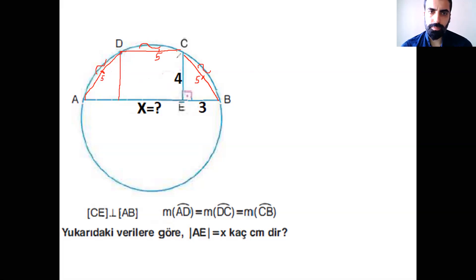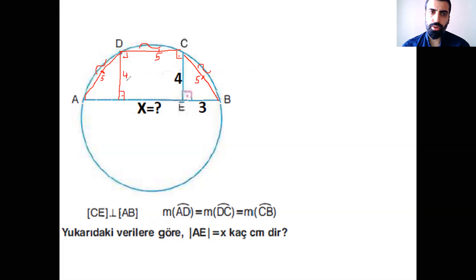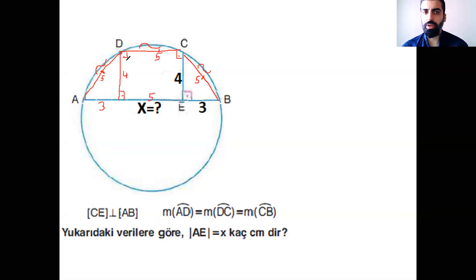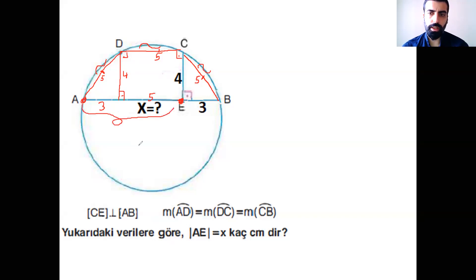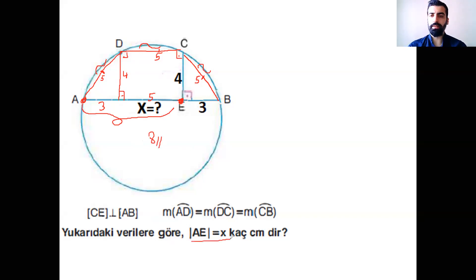Aynı şeyi burada uyguluyorum. Buralar dik, ve paralelden dolayı burası 4 birimse buranın da 4 birim olduğunu söylüyorum. Ve burası 4 ise burasının 3 birim olduğunu söylüyorum — 3, 4, 5 olsun diye. Burasının 5 olduğunu bildiğimiz için şuraya 5 rahatlıkla söylüyorum, çünkü paralel. X dediği şey, yani AE'nin kendisi: 5 artı 3 daha 8 birim olmuş olacak. Sizden AE'nin kendisini istemiş, o zaman X'in kendisi 8.